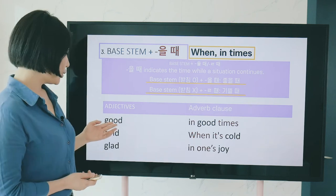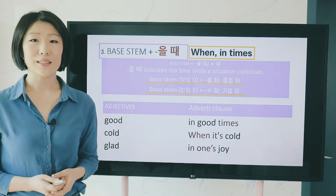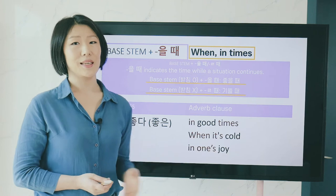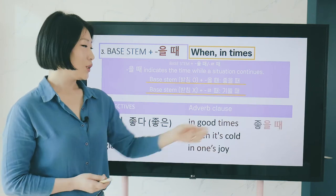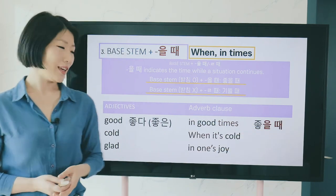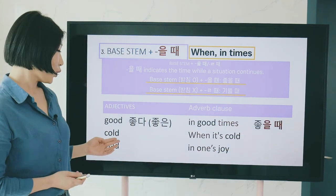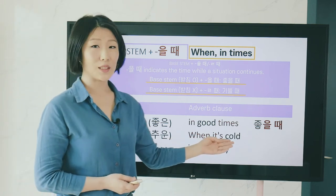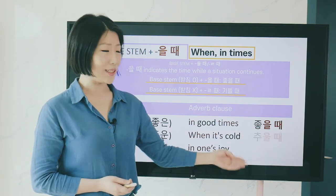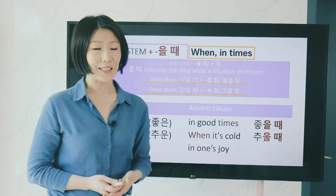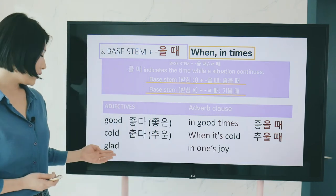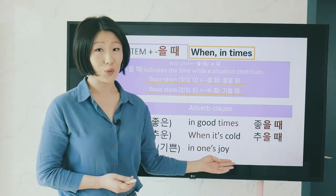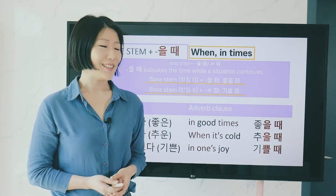So 좋다 (good) becomes 좋을 때 (in good times / when it's good). 춥다 (cold) becomes 추울 때 (when it's cold). And 기쁘다 (glad) becomes 기쁠 때 (when one is glad/happy).